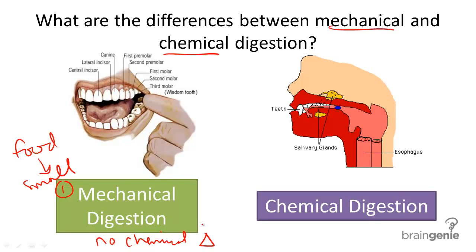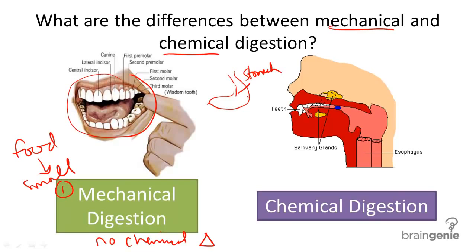Think about your mouth while eating. What organs would help you churn the food? As you can see in this picture, teeth are incredibly useful for breaking down food. You can also imagine the churning nature of the stomach. The stomach is actually lined with incredible layers of smooth muscle tissue, which churns the food and breaks it down into smaller pieces.